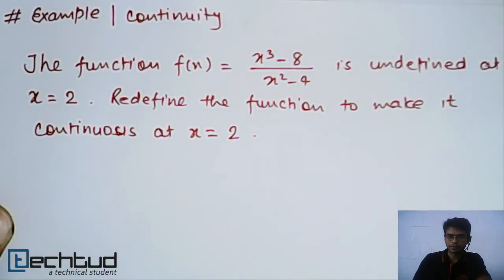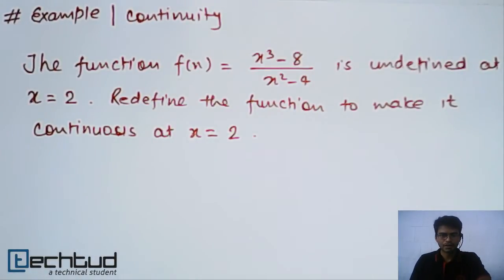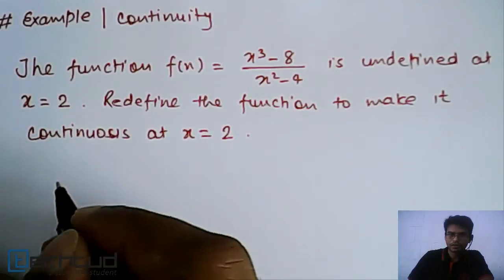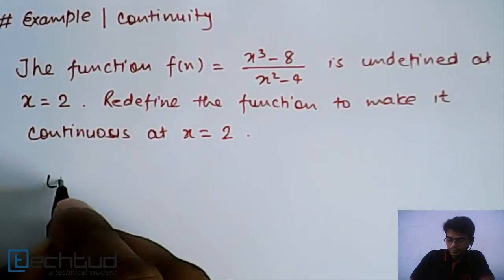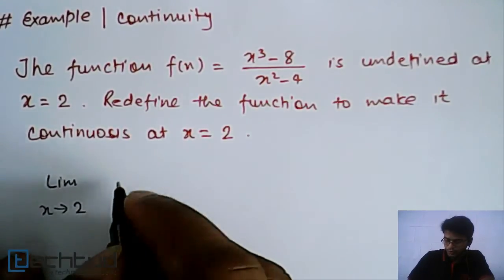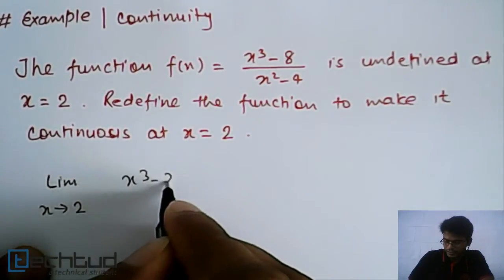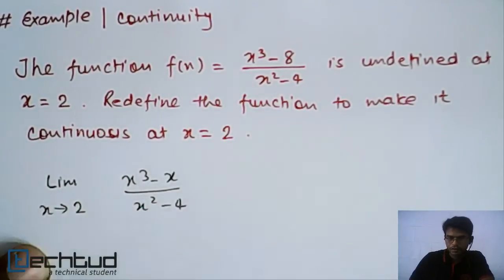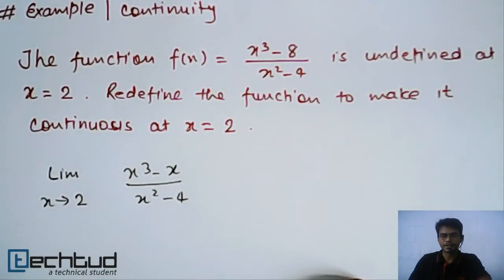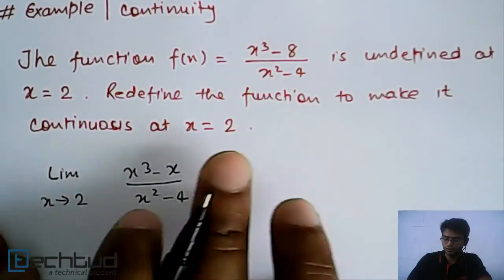For a function to be continuous at a point, it should have its limit existing at that point and the function should also be defined at that point. So first, we will find out the limit of this function — limit as x tends to 2 of (x³ - 8) / (x² - 4). Our approach is to make this function defined and continuous at x = 2.